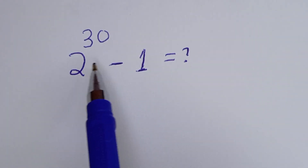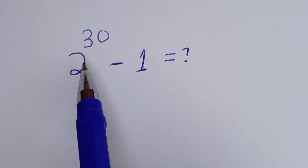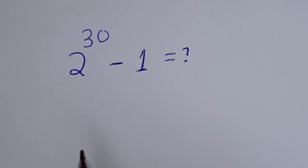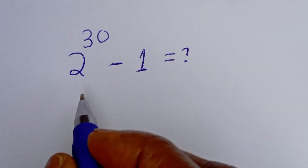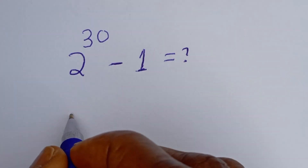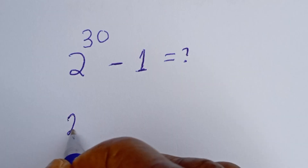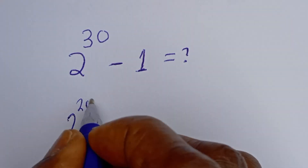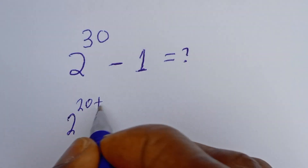Hello. How to simplify this nice math problem: 2 to the power of 30 minus 1. Here, 2 to the power of 30 can be written as 2 to the power of 20 plus 10, minus 1.